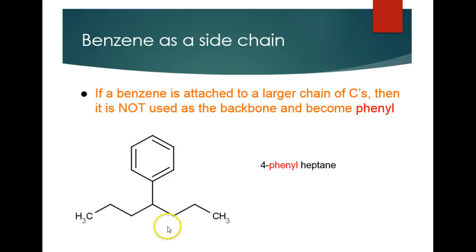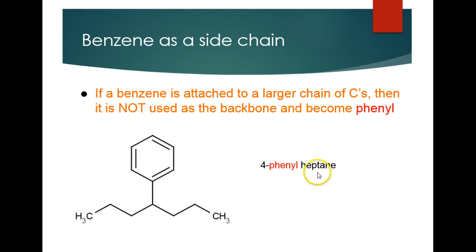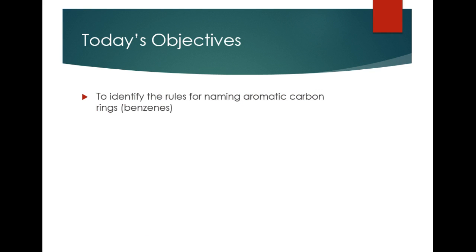Benzene can also be used as a side chain. Anytime the number of carbons in the main chain is greater than six — benzene only has six — benzene becomes phenyl, which is the name for the side chain of a benzene. Here we have a longer chain of heptane, which is seven carbons. The benzene is six carbons, so we have 4-phenylheptane: phenyl being the benzene off the fourth carbon, heptane being the longer chain of seven carbons. To summarize today's objectives: we identified the rules for naming aromatic benzenes, including styrenes, mesitylenes, and naphthalenes. If you have any questions, please bring them to class.